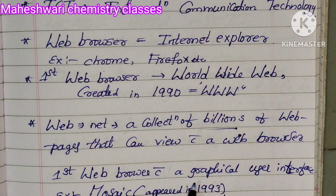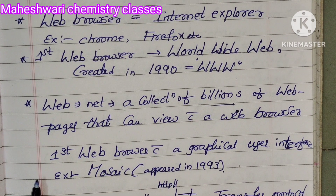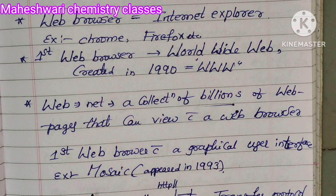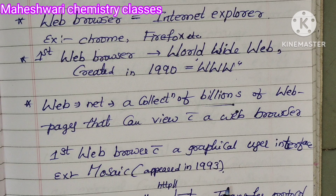The first web browser with Graphical User Interface — for example, Mosaic — appeared in the year 1993.